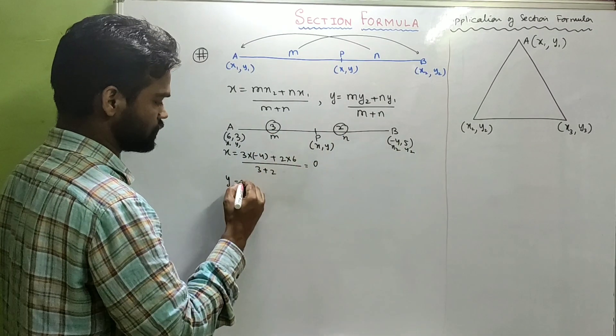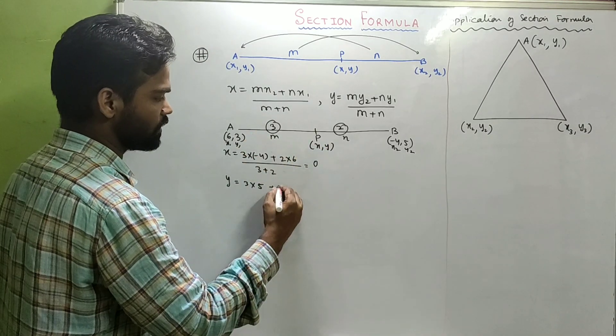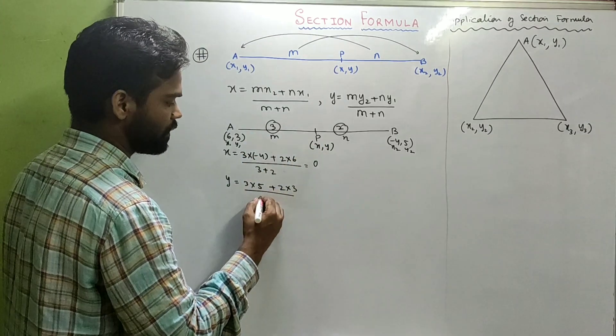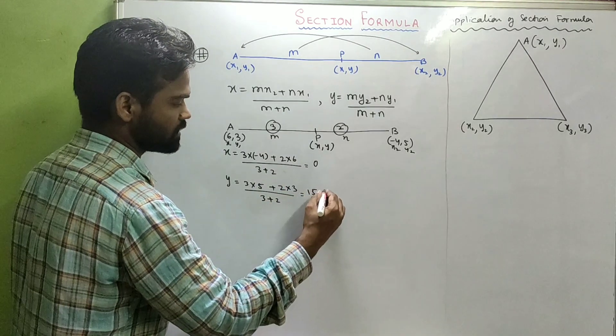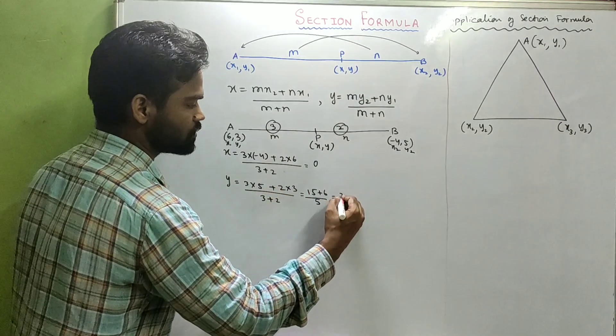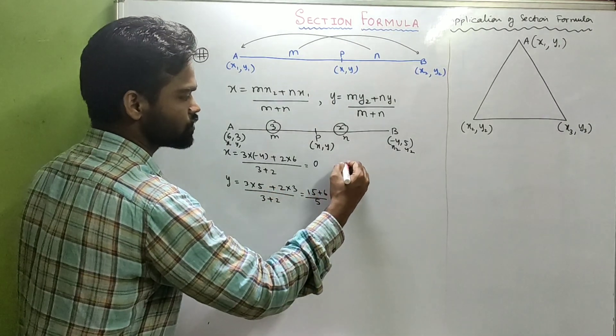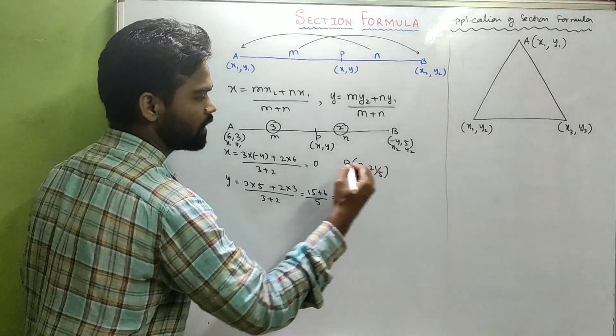And Y equals MY2, that's 3 into 5, plus NY1, that's 2 into 3, by 3 plus 2. That's 15 plus 6, that's 21 by 5. So the coordinate of P is (0, 21/5). Am I clear?